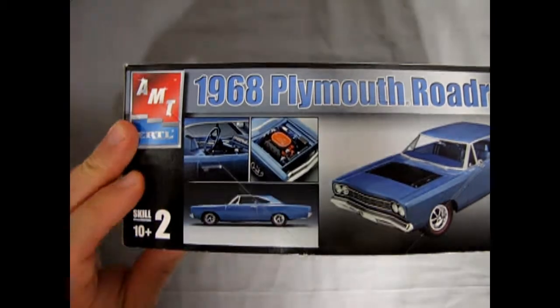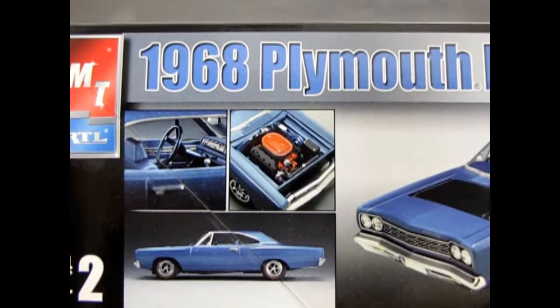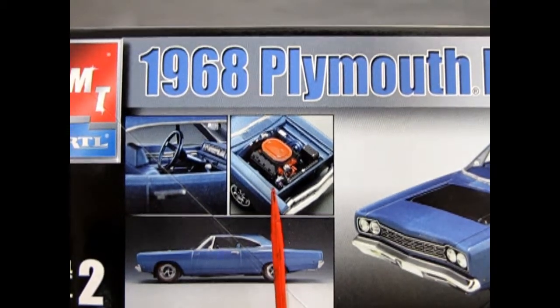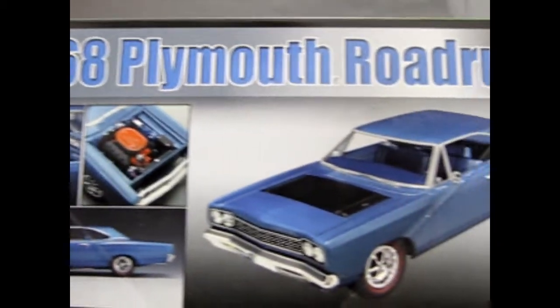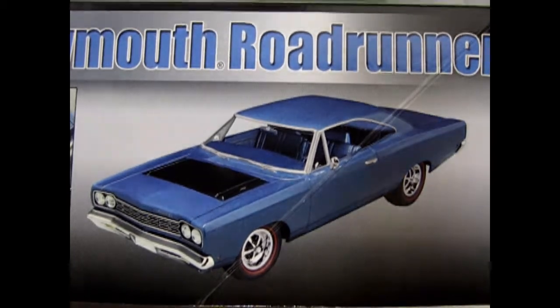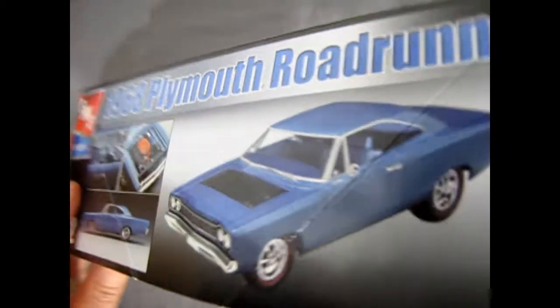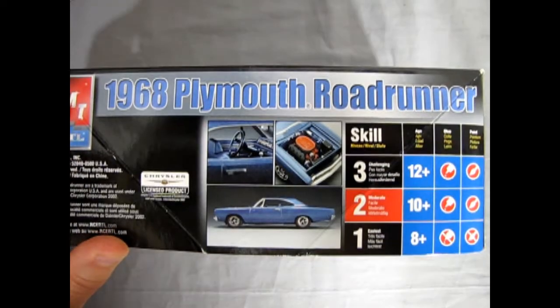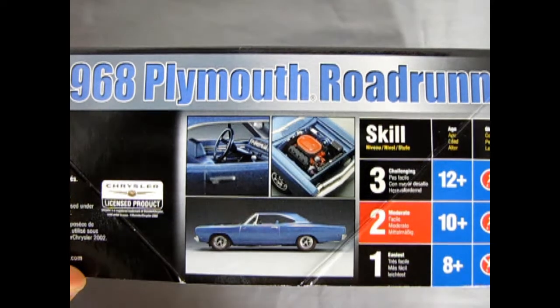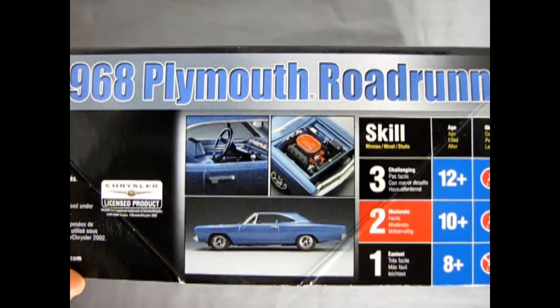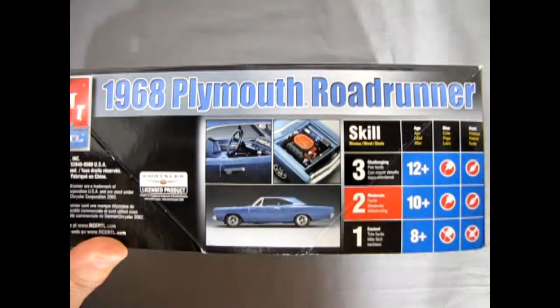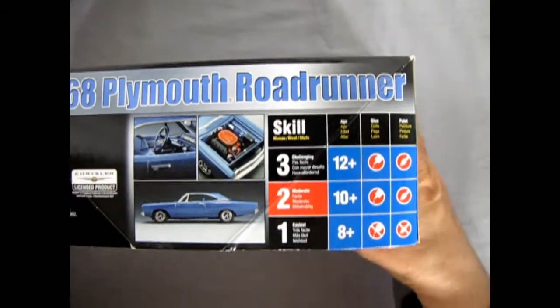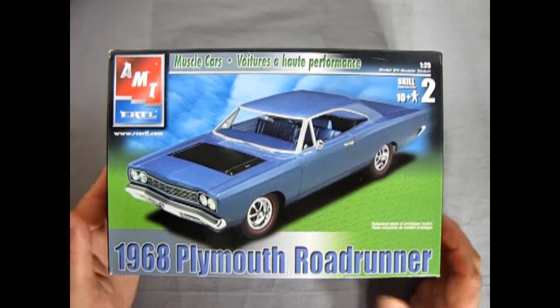As you can see here on the side, this one comes with the Hemi 426 in there, a very cool motor and a very cool car. There it is, three-quarter front view. This is from the time of RC2 Ertl. They got the molds for this kit a little later on. This is a skill level 2 kit for ages 10 and up, requires paint and glue. Now we'll just take a look at what's in the lid real quick and have a lot of fun doing that.